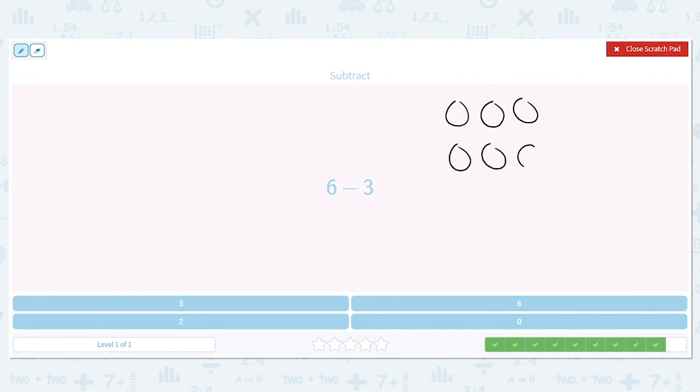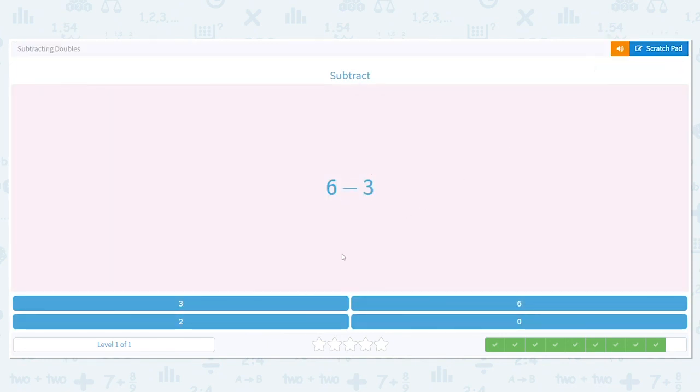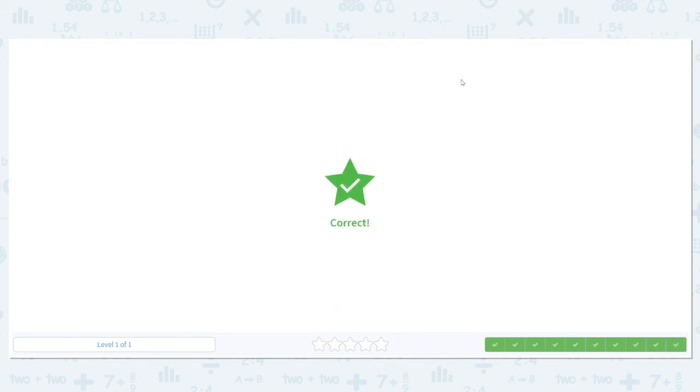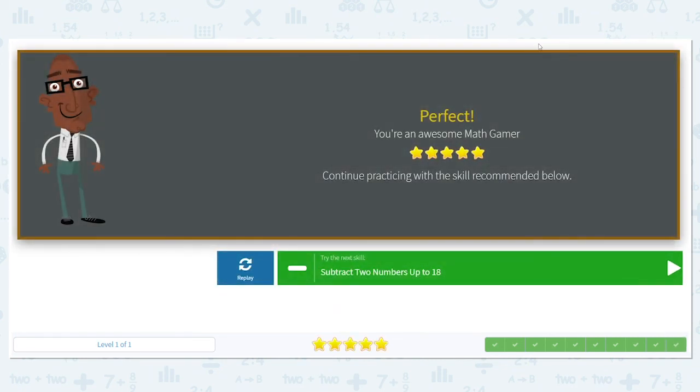Let's try one more: 6 minus 3. 1, 2, 3, 4, 5, 6. How many are we subtracting? I circle it so it sticks out to me. I'm subtracting 3. Count it out: 1, 2, 3. How many are left? 3. So 6 minus 3 equals 3. Way to go, excellent job today.